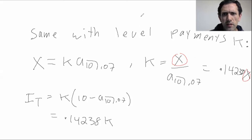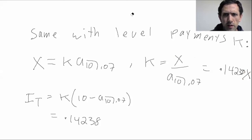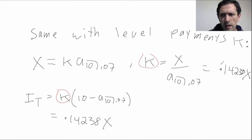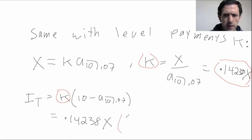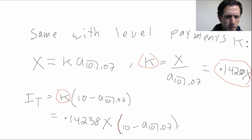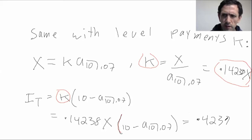Plugging in K = 0.14238X, this is 0.14238X times (10 minus a-angle-10 at 0.07), and you get 0.4238X for the total interest paid with level payments.